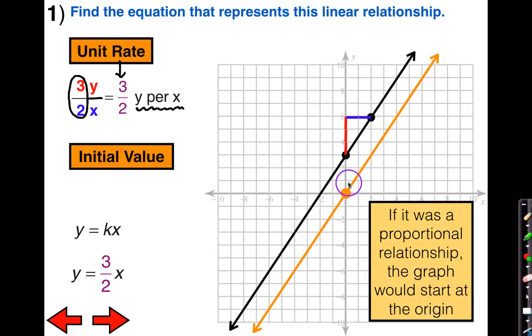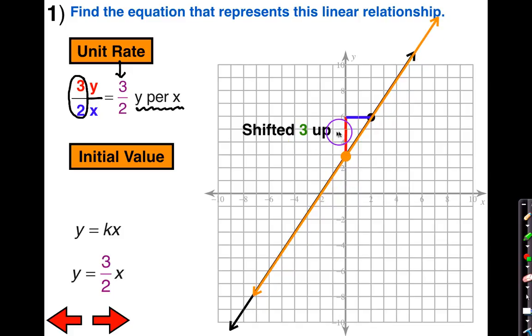However, we're not finding the equation of the orange line. We're finding the equation of the black line. The only difference is there is a shift. This orange line is shifted 1, 2, 3 upwards.